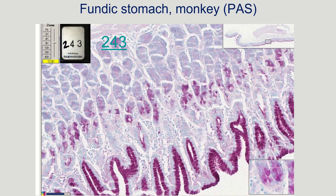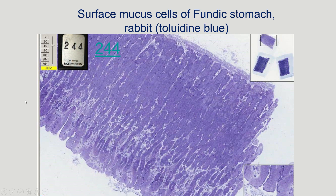This is again the fundic stomach, now in a PAS stain — a little more zoomed in. The PAS stain is highlighting the carbohydrate-rich places, including all the mucous membranes throughout the fundic stomach. Finally, this is the fundic stomach of a rabbit in toluidine blue — everything is blue, but you can see varying intensities of blue and some granularity, and that's how you differentiate things in a toluidine blue stain.